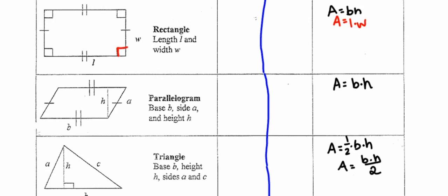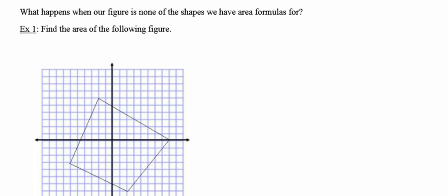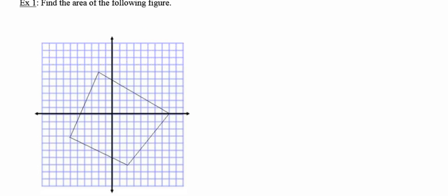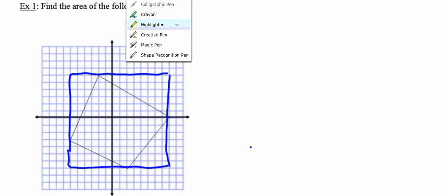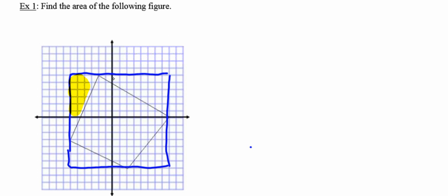These are our old familiar friends from middle school. What happens if we're given a figure that doesn't fall into one of these categories? We know this figure is a quadrilateral, but it's not a triangle, rectangle, parallelogram, or any of those familiar shapes. So what I'm going to do is divide it up so that I can find its area using the shapes we do know — I'm going to enclose this quadrilateral inside a rectangle. I'll find the area of the blue rectangle and subtract out the areas of the yellow triangles, leaving the area of the quadrilateral.